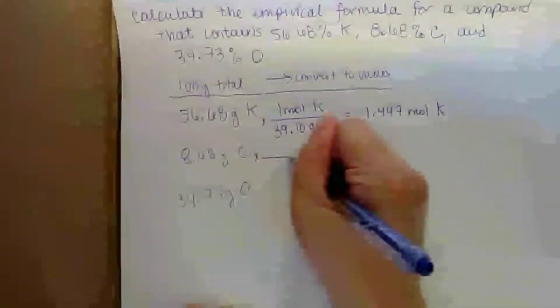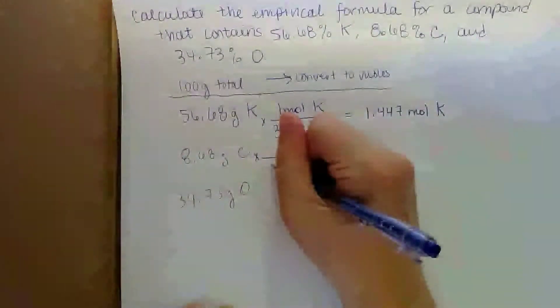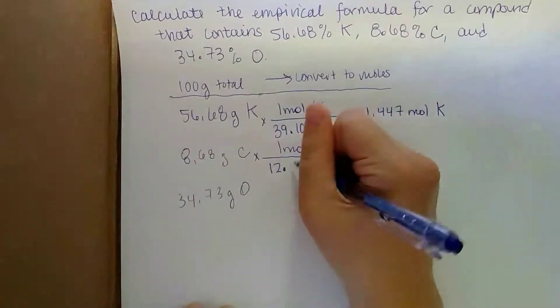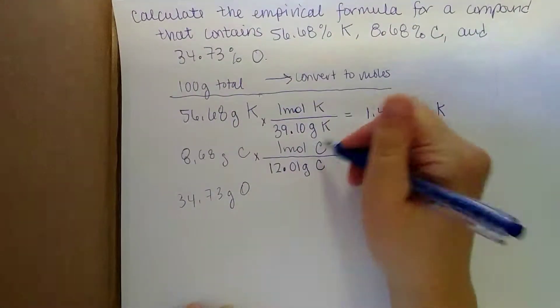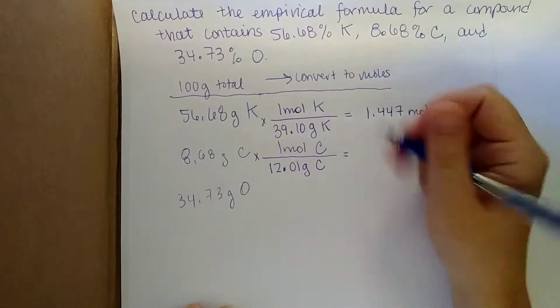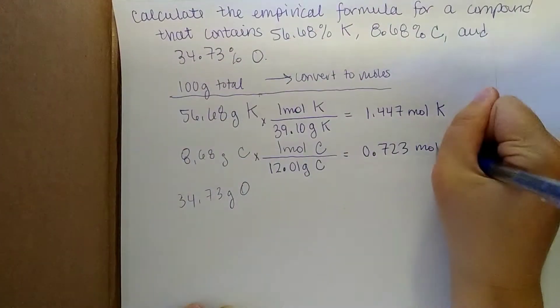And then we do the same thing for the other compounds. So we want to get moles of carbon. We know from the periodic table that there are 12.01 grams of carbon for every one mole of carbon. And this is going to give us 0.723 moles of carbon.